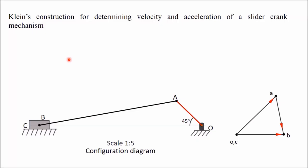If you want to determine velocity and acceleration of different elements of a single slider crank chain, you need to draw separate velocity and acceleration diagrams apart from a configuration diagram. Klein's construction for determining velocity and acceleration of a slider crank mechanism does not require separate diagrams — in the configuration diagram itself, we can draw both velocity and acceleration diagrams.